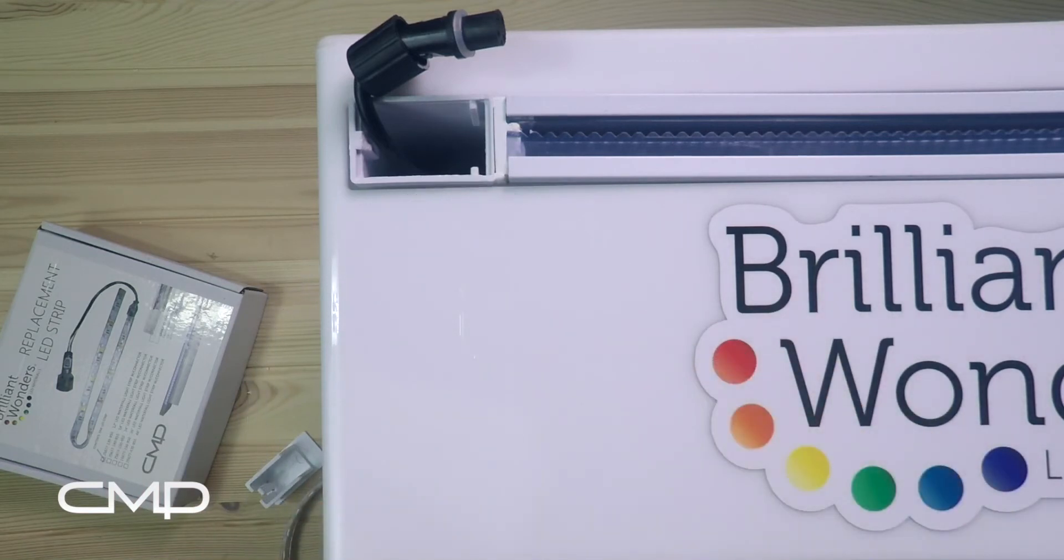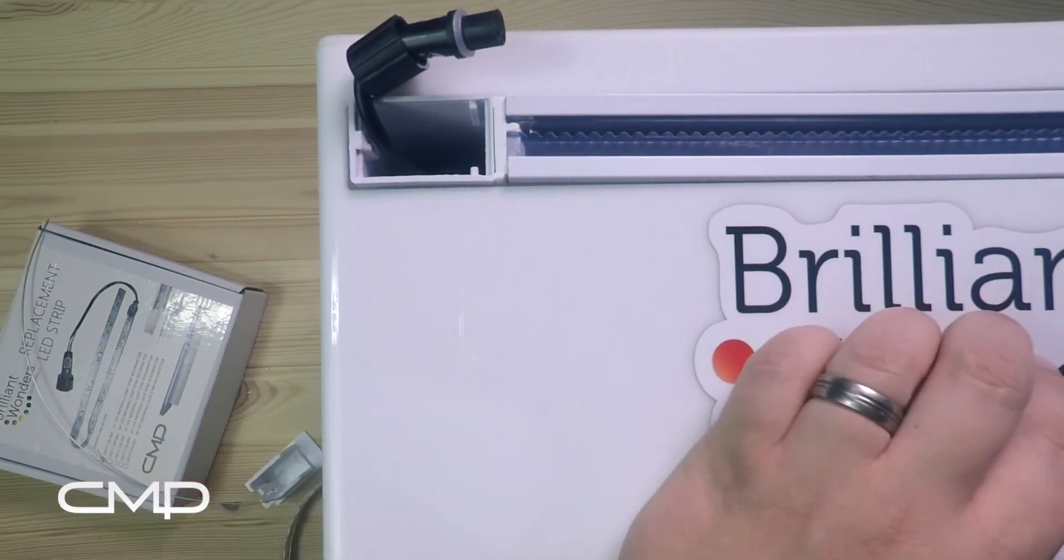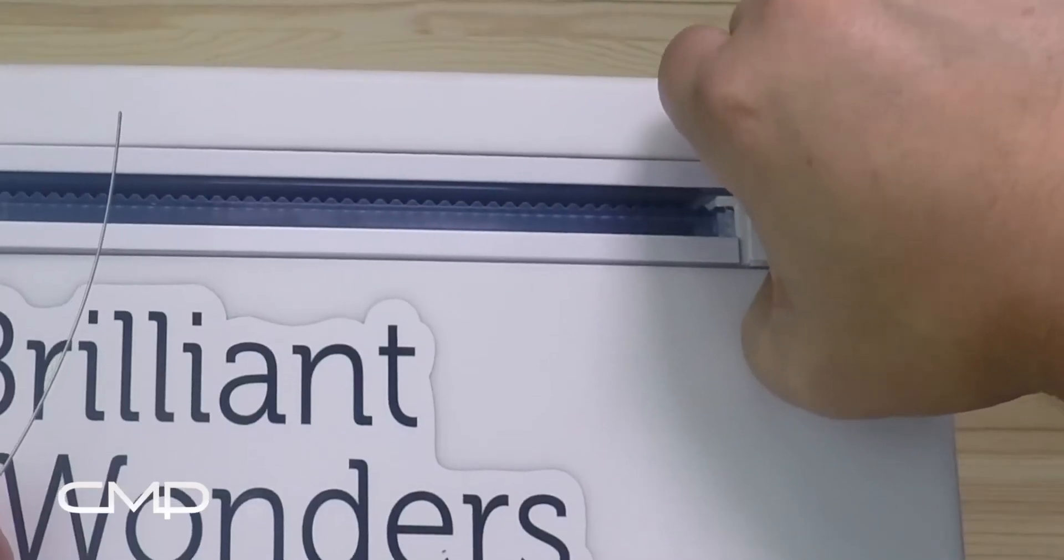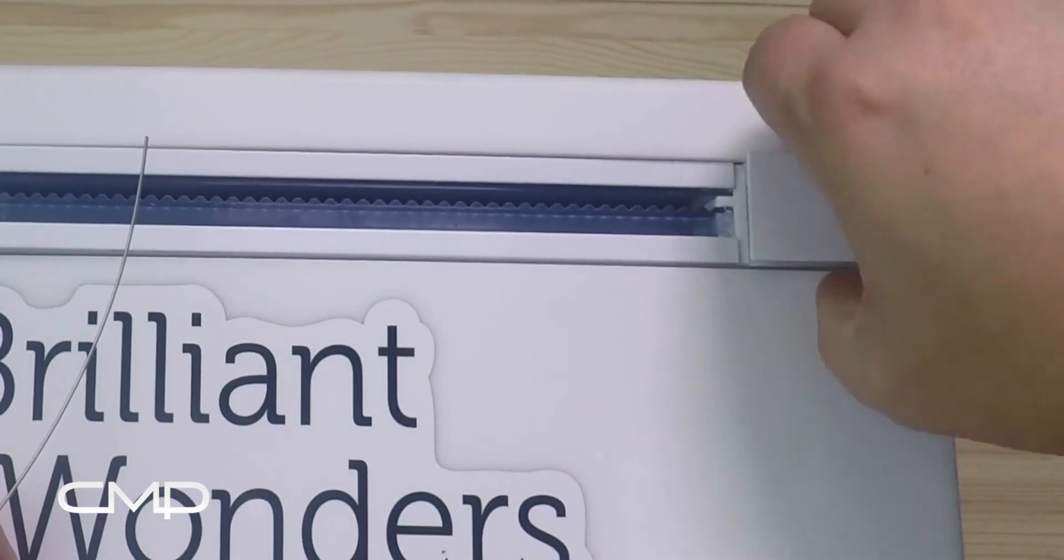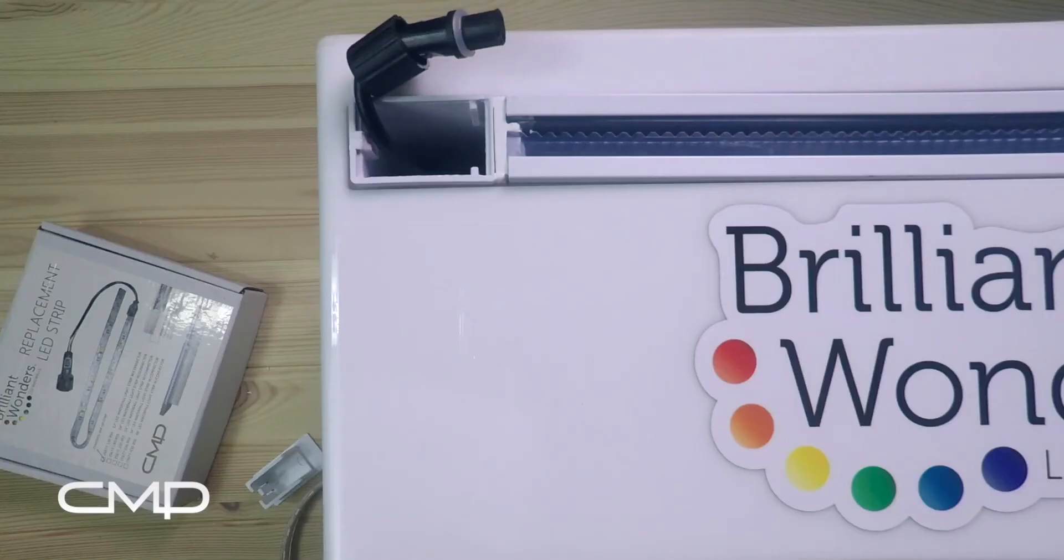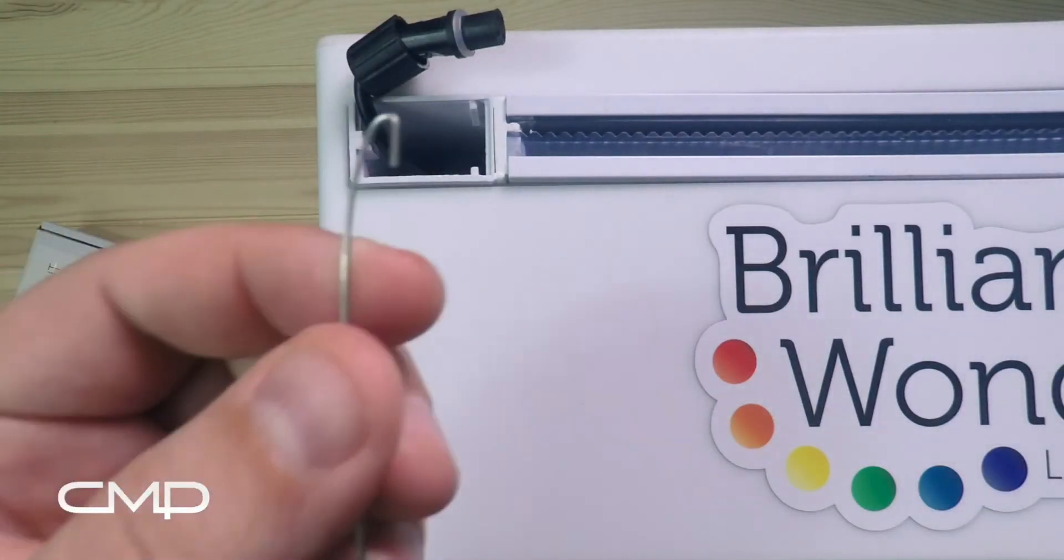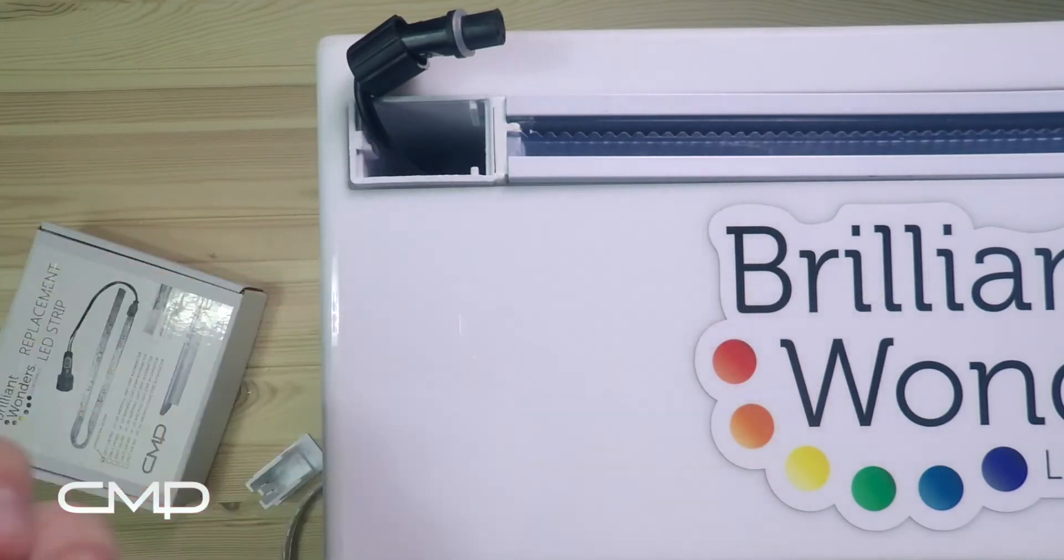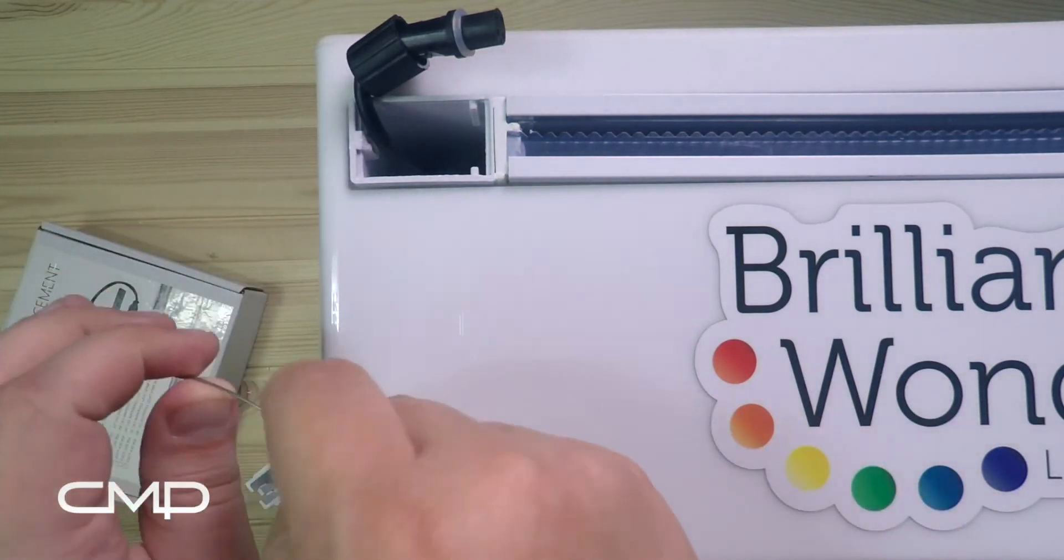And with the wire, we're gonna go ahead and use that. You can remove the door on the other end in the exact same way as you did the first door. And then one end of the wire is kind of bent over so that you can hook it onto the strip. So take your other end and just feed it through all the way to the other side.